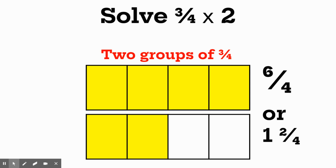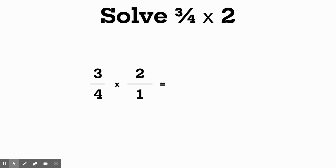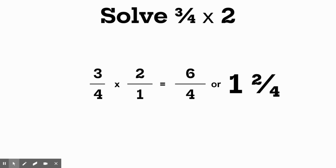Now let's look at it without a model. Three fourths times two — I would set it up as three fourths times two over one. We multiply numerators and we multiply denominators: three times two is six, four times one is four. We get the same answer as with the picture — six fourths — and you can rename that as one and two fourths. So either strategy works.